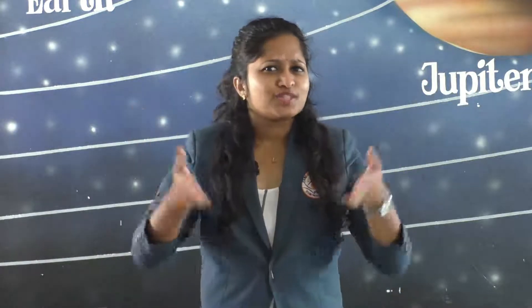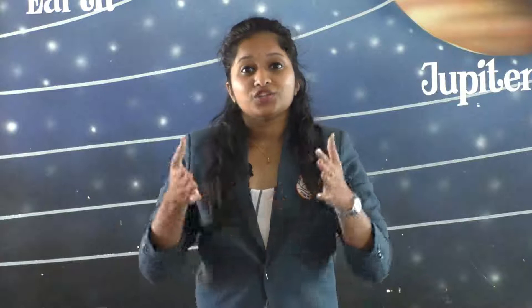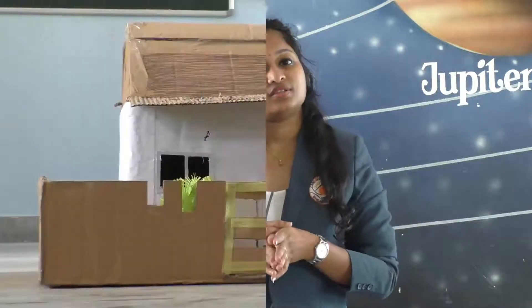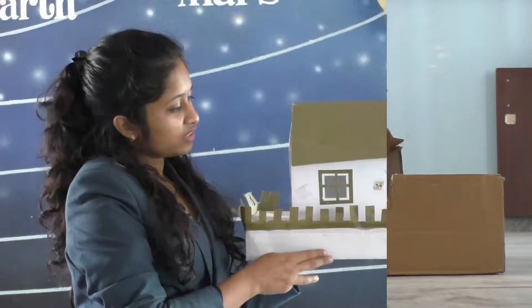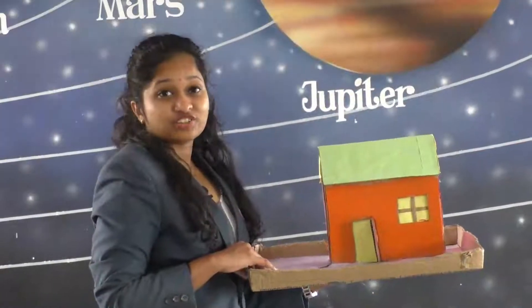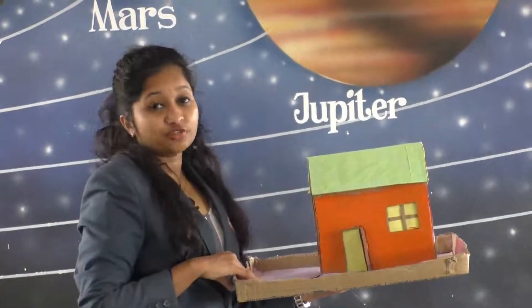Dear students, today let's move on to a new unit which is 'My Environment' — this is your second unit. We are going to discuss Chapter 5, which is 'Houses Around Us.' You see different varieties of houses around you. I'll show you some varieties of houses — here is one model of a house, and this is another variety of a house. I have one more model of a house.